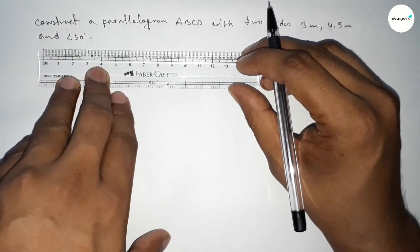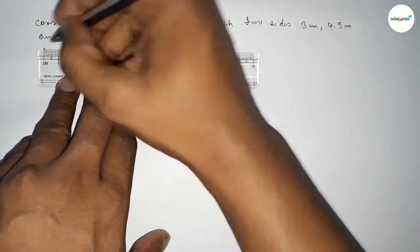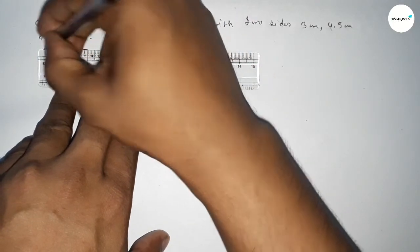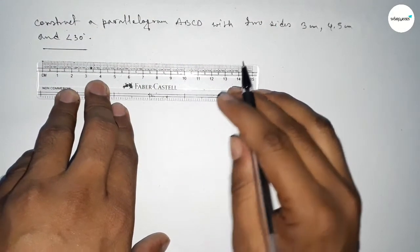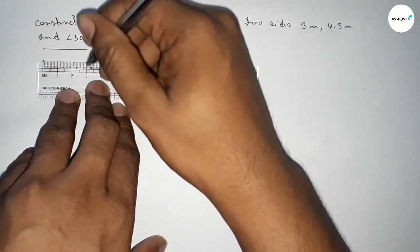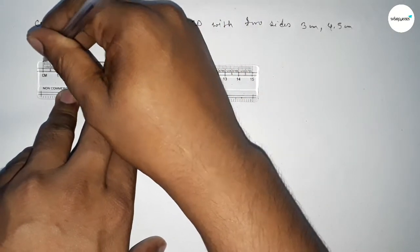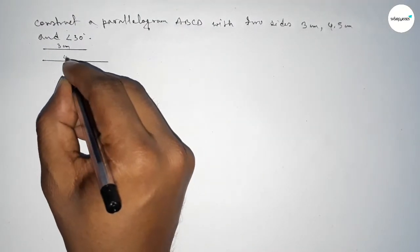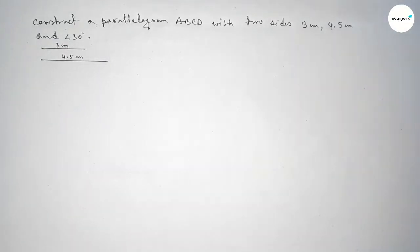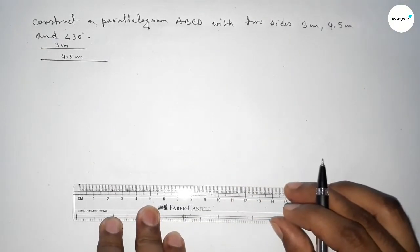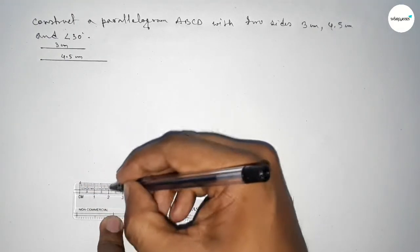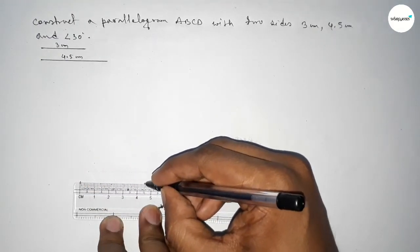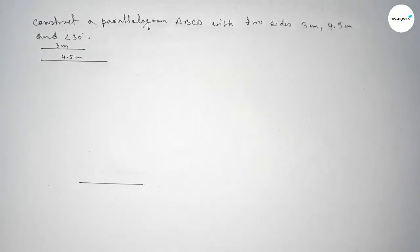First of all, we have to draw a line of length 3 centimeter. This is the 3 centimeter line. Now drawing another line of length 4.5 centimeter. So this one is 3 centimeter and this one is 4.5 centimeter. Now again drawing a line of length 4.5 centimeter, taking point B and point C.